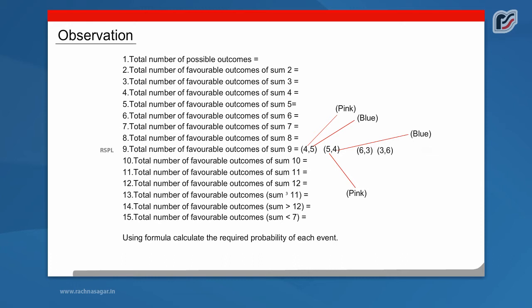Total number of favorable outcome of sum 9 is equal to 4. Total number of favorable outcome of sum 10 is equal to 3. Total number of favorable outcome of sum 11 is equal to 2. Total number of favorable outcome of sum 12 is equal to 1. Using formula, calculate the required probability of each event.